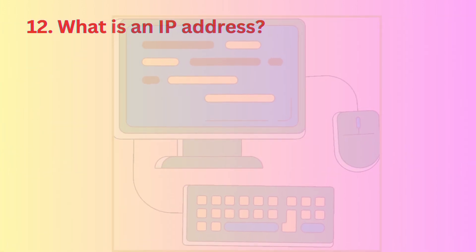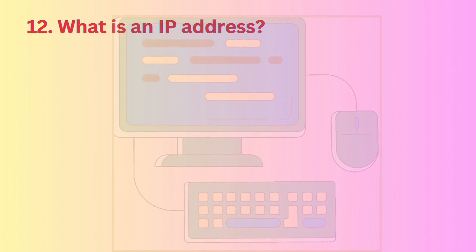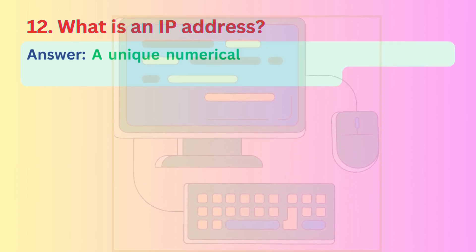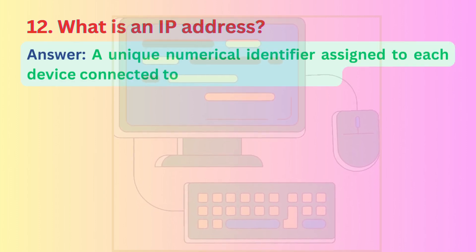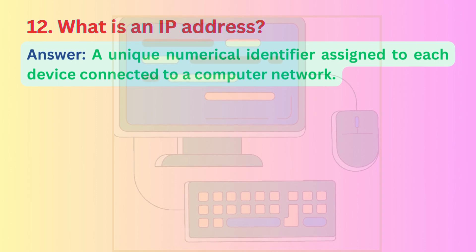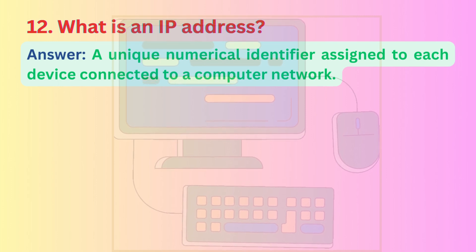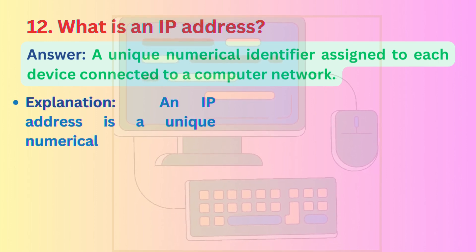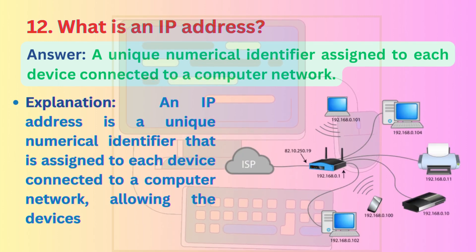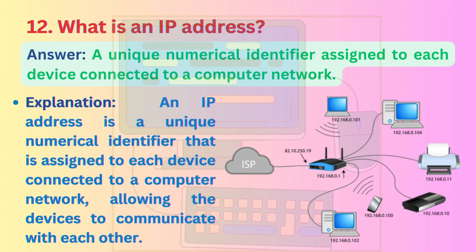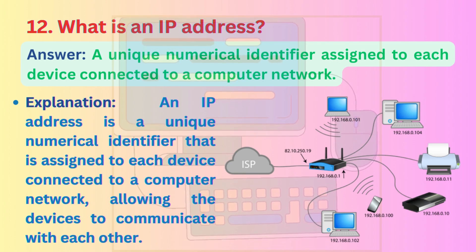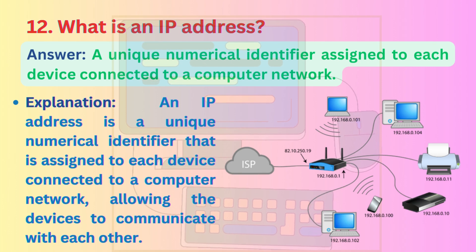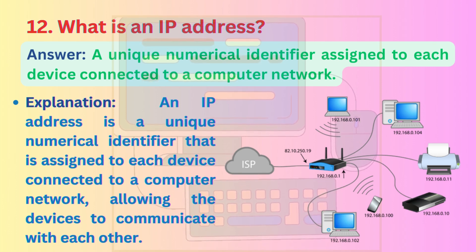Question 12: What is an IP address? Answer: A unique numerical identifier assigned to each device connected to a computer network. Explanation: An IP address is a unique numerical identifier that is assigned to each device connected to a computer network, allowing the devices to communicate with each other.